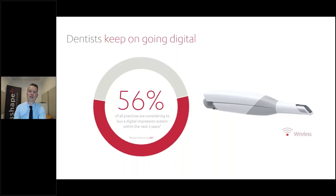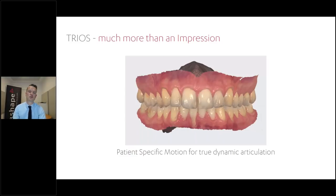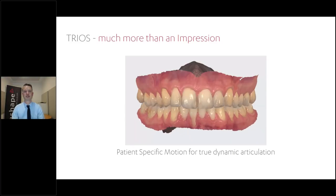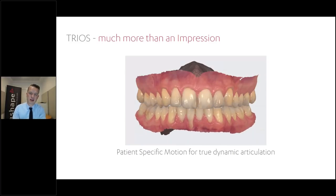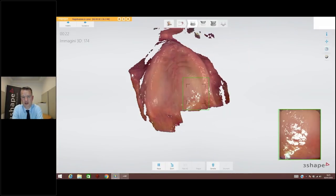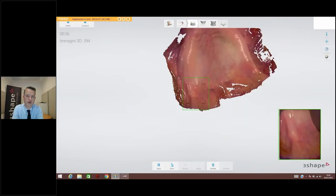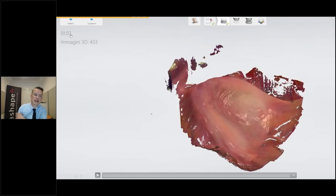Intraoral scanning is much more than impressions — you can see color, do shades, and what's really cool in beta right now is patient-specific motion. You can take the TRIOS and capture patient-specific motion — not simulated motion but real patient-specific motion. If you're skilled at scanning edentulous arches, you can scan a full arch in about one minute and three seconds with the TRIOS scanner. Intraoral scanning of edentulous patients is possible today.